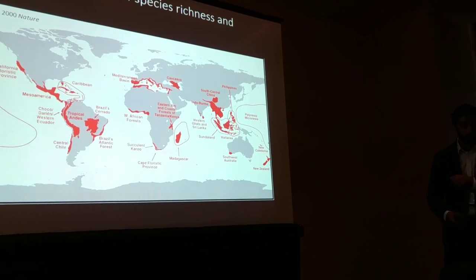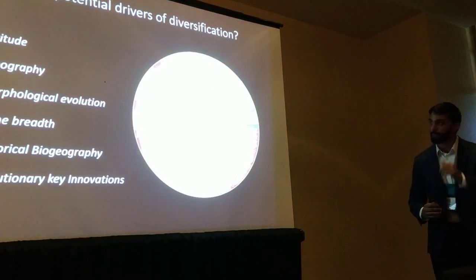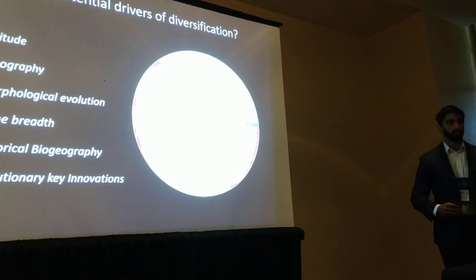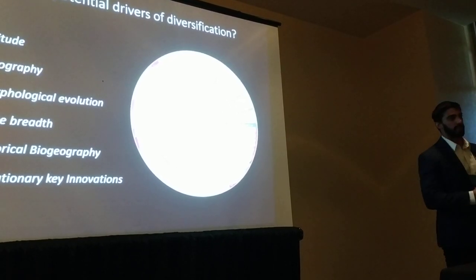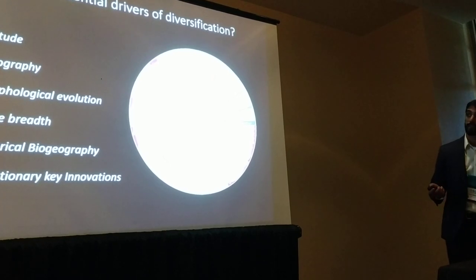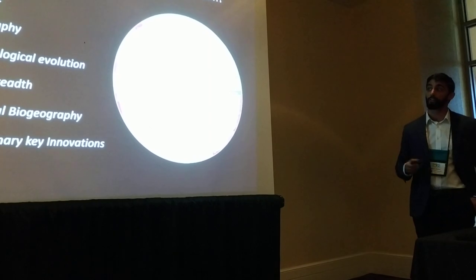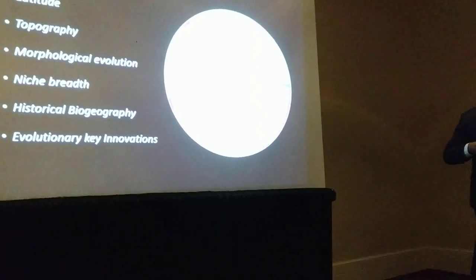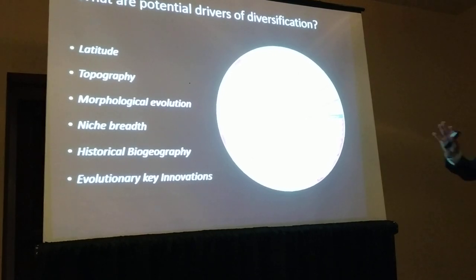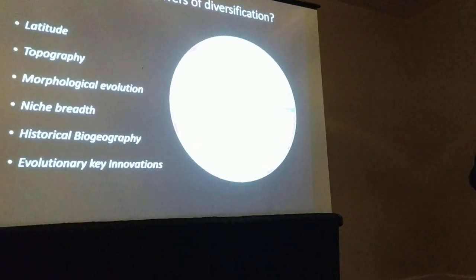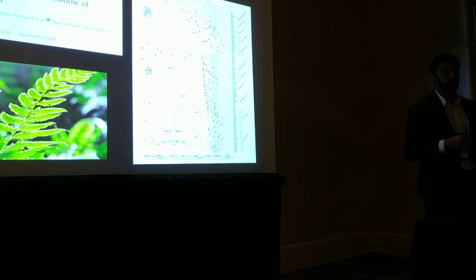Empirical work recently is showing that these two hypotheses are not necessarily mutually exclusive. But if we focus on these rapidly radiating clades, we can ask what is driving their diversification. Many people have subsequently elucidated some of these potential drivers. These include latitude, topography, morphological evolution, niche breadth, historical biogeography, and evolutionary key innovations. This is not an exhaustive list, but I want to focus on some of these drivers that have been emphasized as being important in fern diversification.